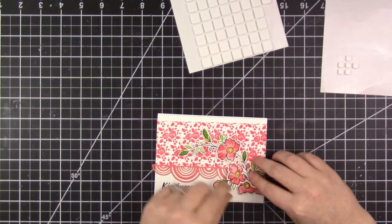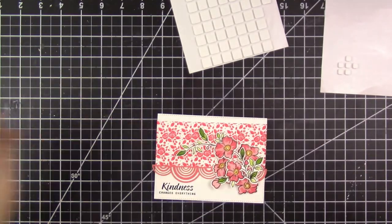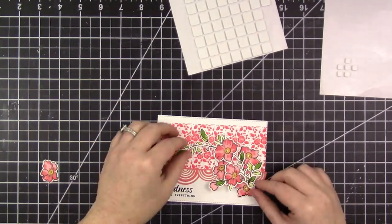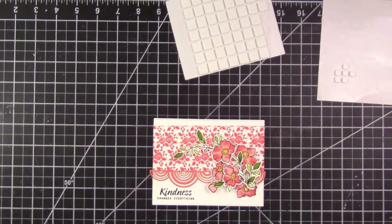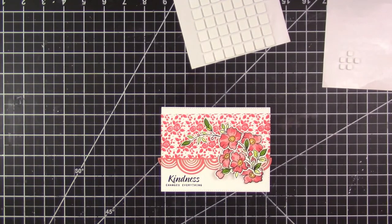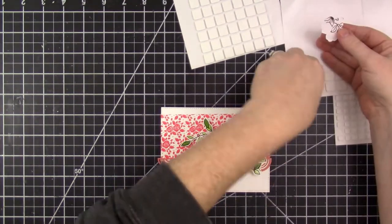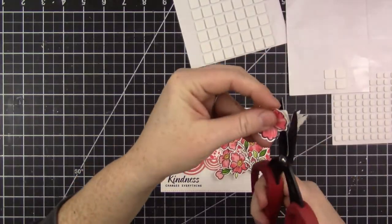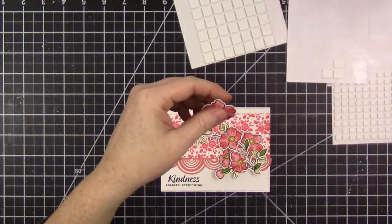Then I'll start arranging the flowers. I'll adhere them to the card using foam squares to keep them in place. I actually use a combination of both the thin and the regular foam squares, and I really like to do this when layering images like this so that I don't end up adding too much bulk to the card.